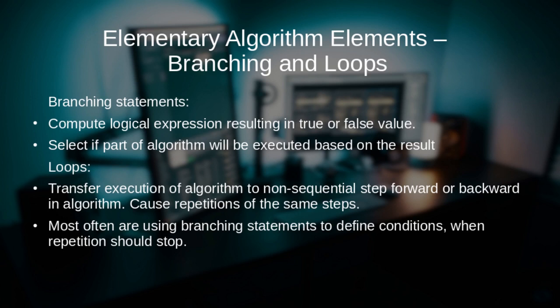In algorithms, the condition lines are often a single line that performs one of two simple operations, or even just one operation with the fail path being the execution of the next step. On the other hand, in code, the branching instructions frequently include large blocks of code and nest within each other.